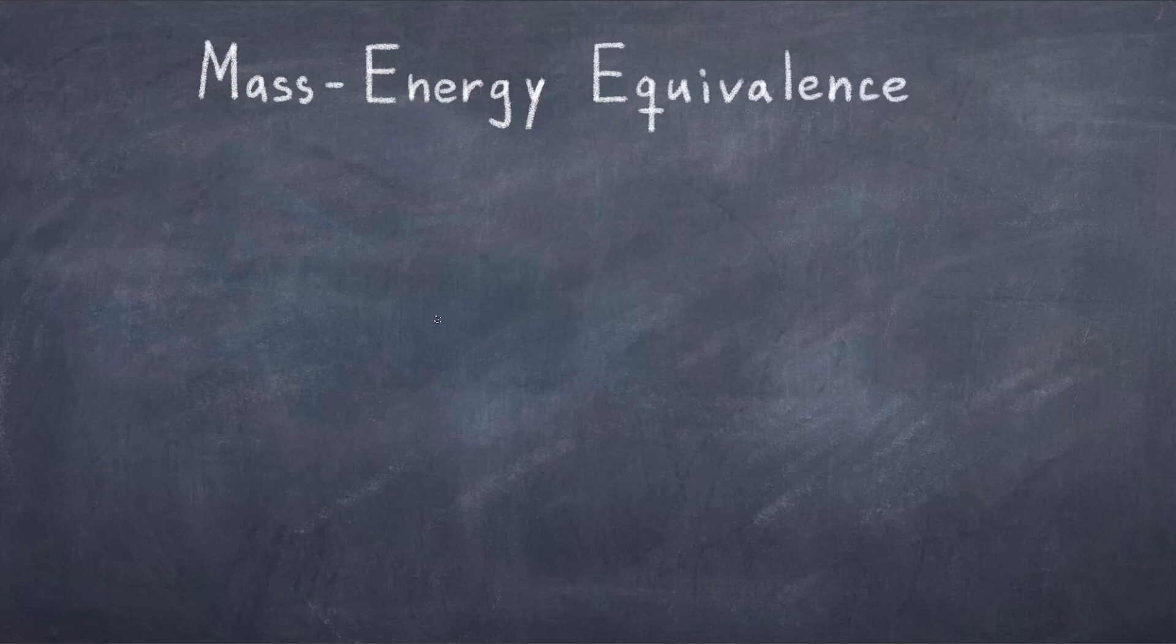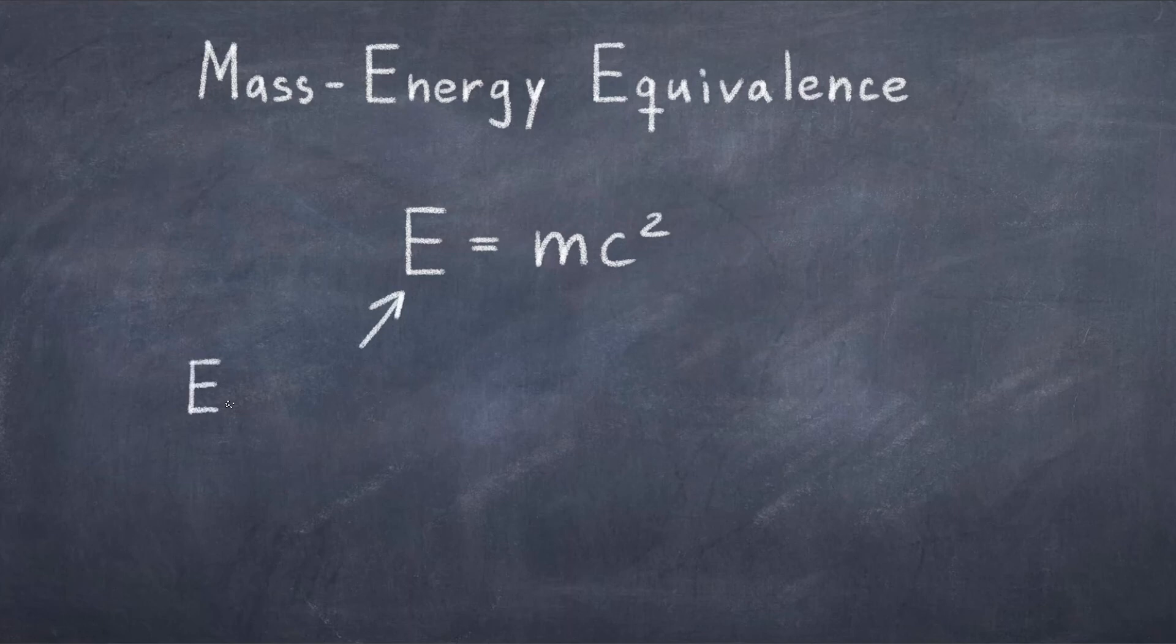Note that this equation describes the system at rest. The equation is different if you are moving. In short, this gives an explicit relation between mass and energy. We see that up to a factor of c squared, mass and energy are the same thing, because everything that has mass has energy.